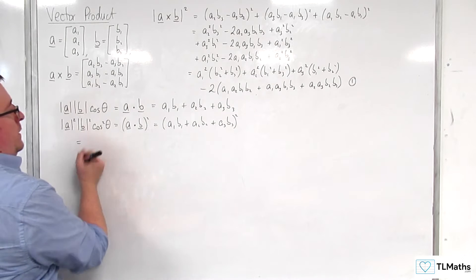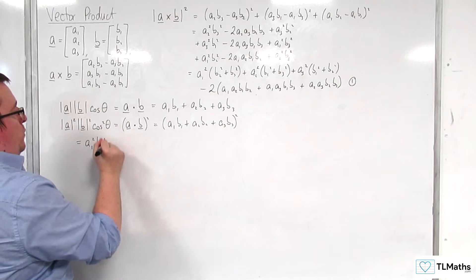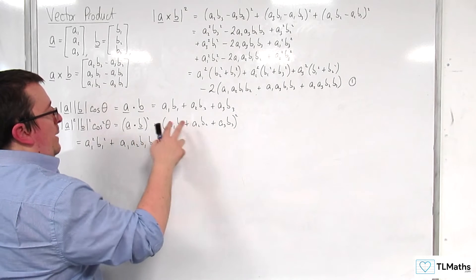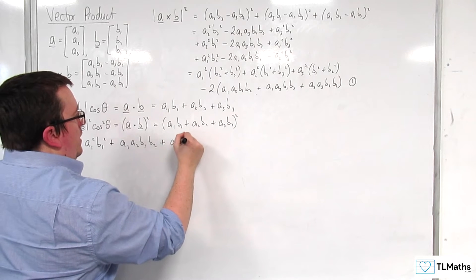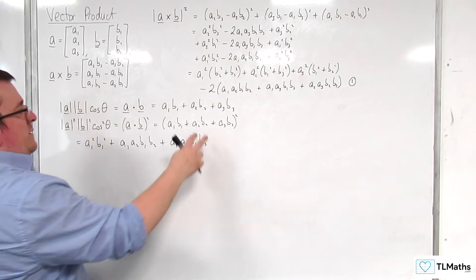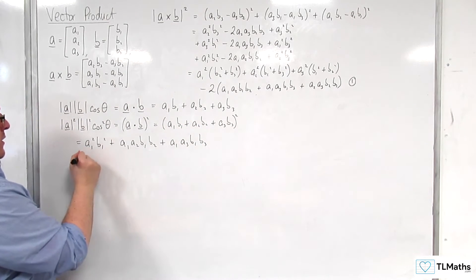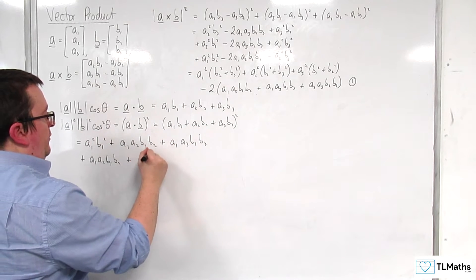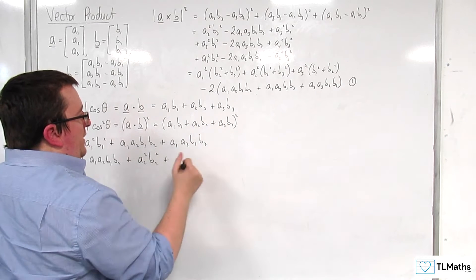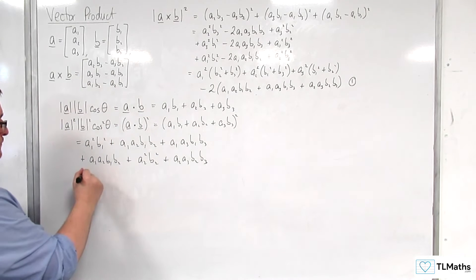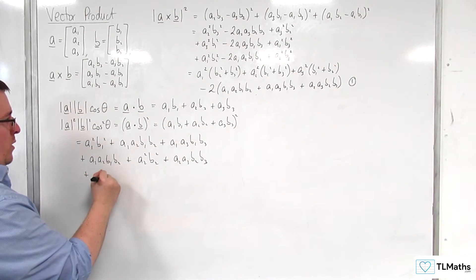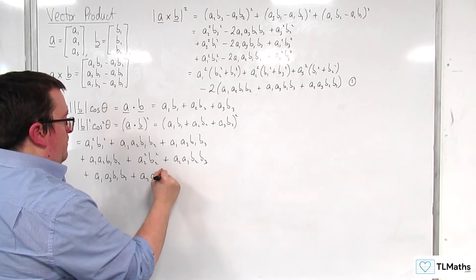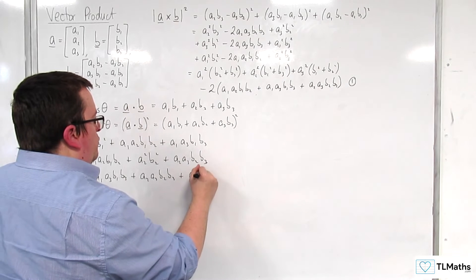Now I need to expand this out. We get a₁²b₁², then a₁b₁ times a₂b₂ gives a₁a₂b₁b₂, and a₁b₁ times a₃b₃ gives a₁a₃b₁b₃. Then a₂b₂ times a₁b₁ gives another a₁a₂b₁b₂, plus a₂²b₂², plus a₂a₃b₂b₃. Then a₃b₃ times a₁b₁ gives a₁a₃b₁b₃, plus another a₂a₃b₂b₃, plus a₃²b₃².